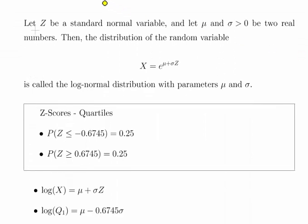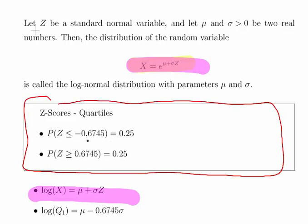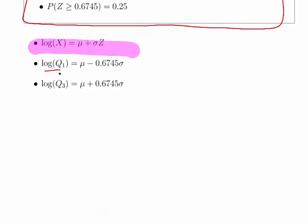As a quick remark, this is how we would do the method of percentiles. This is essentially the definition of a log-normal random variable. Using the method of percentiles, we transform the expression by taking the log of both sides. Using z-scores, the key z-score is plus or minus 0.6745, which marks out the first and third quartiles of the standard normal distribution. So the log of Q1 equals mu minus 0.6745 sigma, and the log of Q3 equals mu plus 0.6745 sigma. The 0.6745 is the z-score corresponding to 25 percent.